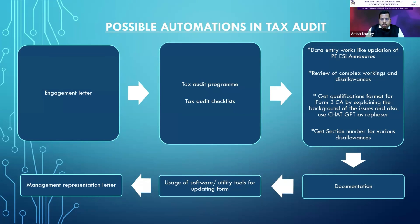AI can also be used to perform various data entry works in the tax audit form. For example, for updating the clause on employees' contribution on PF and ESI — suppose if an assessee has got 84 branches and they have 800 to 900 plus entries — in those cases, we can use CA ChartGPT or ChatGPT versions to get the data entry works easily done.